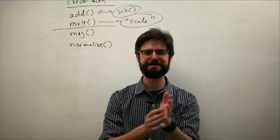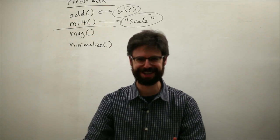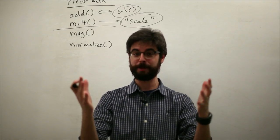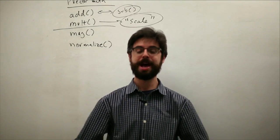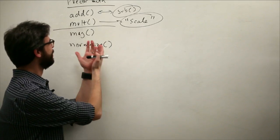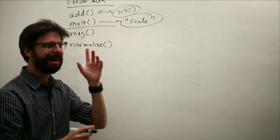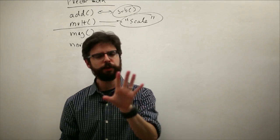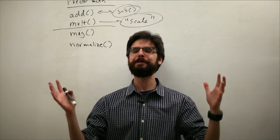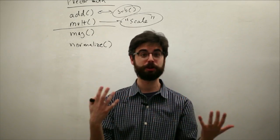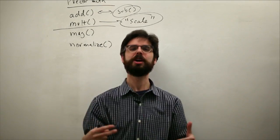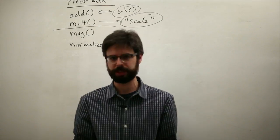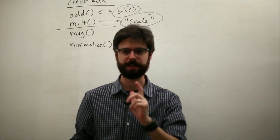We just finished looking at vector math operations add and multiply, and in this video all we're going to look at is magnitude and normalize. We're still at this moment just looking at these functions in a kind of abstract way. Once we can get through this list, it's going to be much more useful and interesting to actually apply these functions into a real practical example. But it's worth looking at the math behind magnitude for a second.